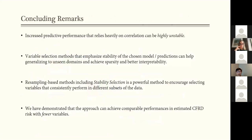And just a few takeaways. So increased predictive performance that relies heavily on these correlation can be quite unstable. And to have variable selection methods that emphasize stability can help generalizing to unseen domains and hopefully achieve sparsity and better interpretability for the models. So things like stability selection, it's a quite powerful approach to encourage selecting variables that consistently performs in different subsets of your data.